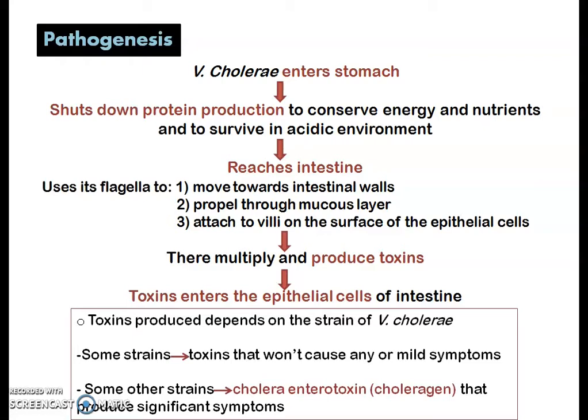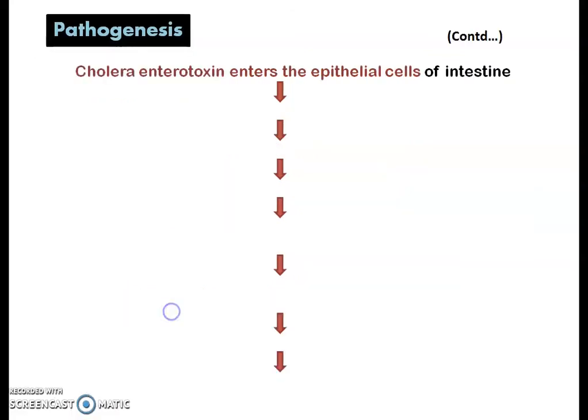Other strains produce the toxin cholera enterotoxin, also known as choleragen, which produces significant symptoms. When cholera enterotoxin enters the epithelial cells of the intestine, the G protein present in the epithelial cells becomes permanently activated by this cholera enterotoxin.